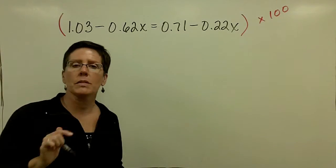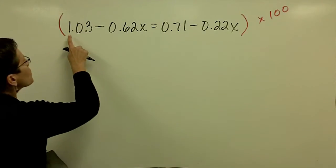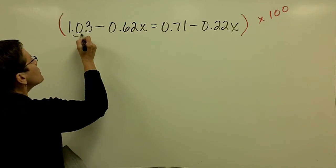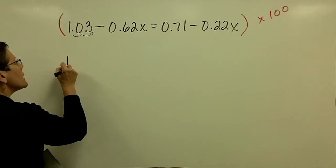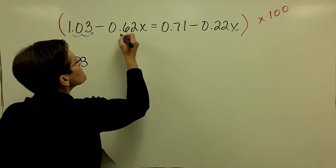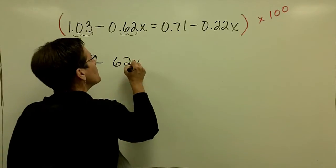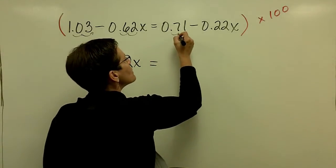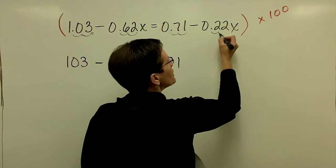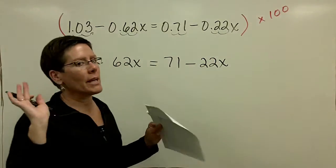Because the farthest position in terms of a decimal value is in the hundredths place. So when I multiply 1.03 by 100, I just move the decimal place two places to the right and I get 103. And when I multiply 0.62 by 100, I get 62. And when I multiply 0.71 by 100, I get 71. And when I multiply 0.22 by 100, I get 22. Oh man, it is so much easier.